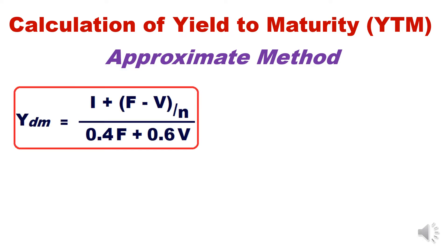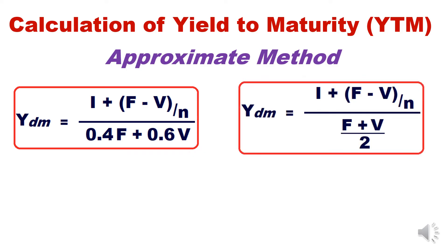To calculate yield to maturity we use an approximate method, since it is a trial and error method. The approximate YTM formula is: YTM = [I + (F − V) / N] / (0.4F + 0.6V). A second formula is: YTM = [I + (F − V) / N] / [(F + V) / 2].